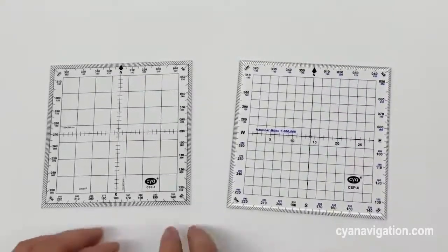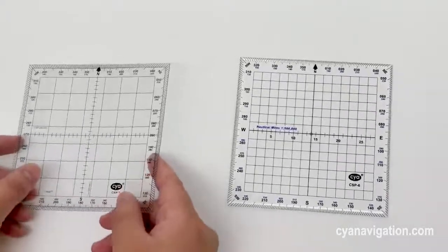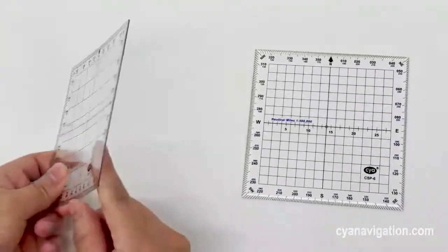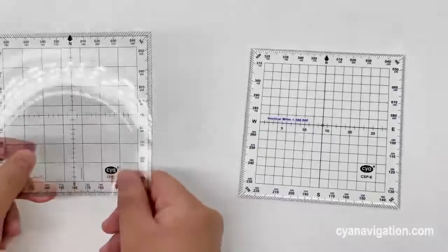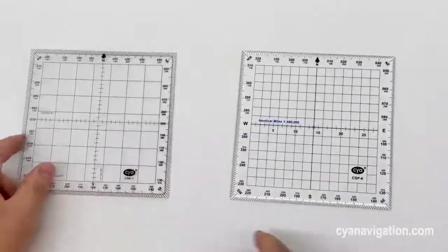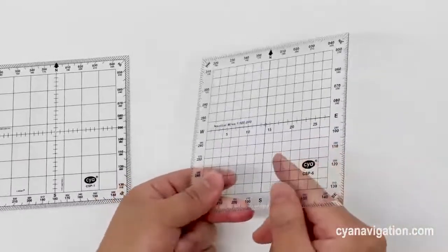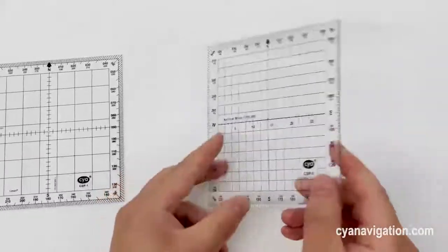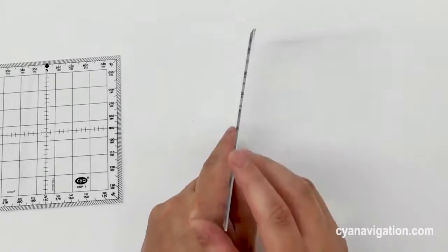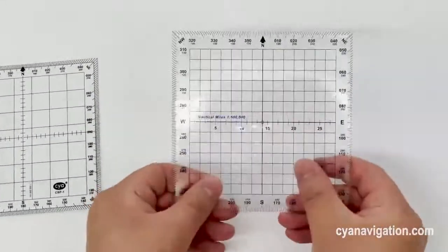Their difference is we made this protractor with flexible plastic, so this protractor is bendable. While this one is made of strong plastic - we can see its thickness here - very strong.